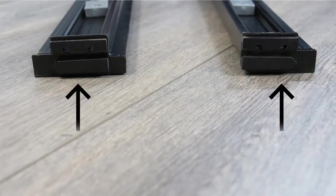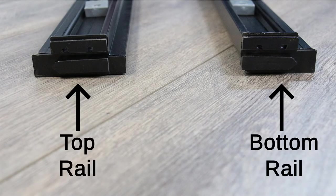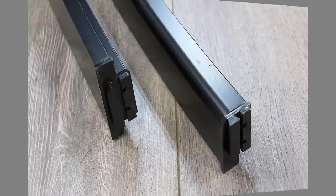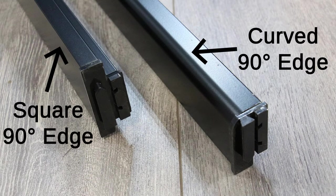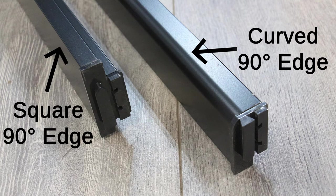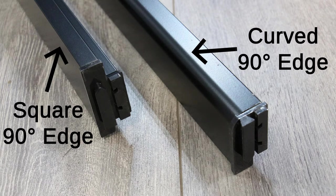When connecting the framework it's important to know which rail is which. The top rail is longer from top to bottom and the bottom rail is shorter. The top rail also has a square 90 degree edge whilst the bottom rail has a curved 90 degree edge. On the bottom rail the curved 90 degree edge faces down and sits in the tray. On the top rail the square 90 degree edge also faces down.